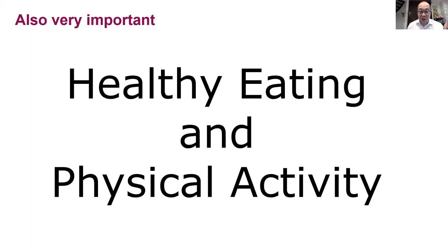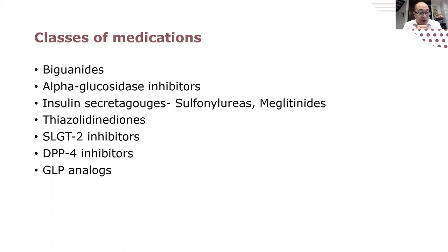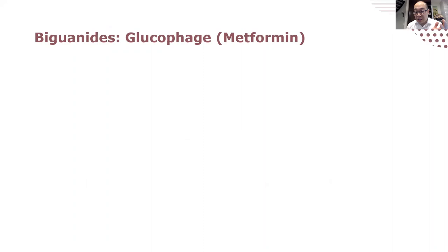You should have this diagram memorized for the exam. As you can see, healthy behavior interventions are discussed at all stages of diabetes. Now let's go over the classes of medications I'll be covering today. The first one is biguanides, and the main medication in this class is metformin.